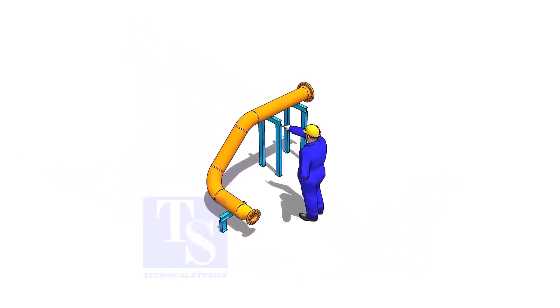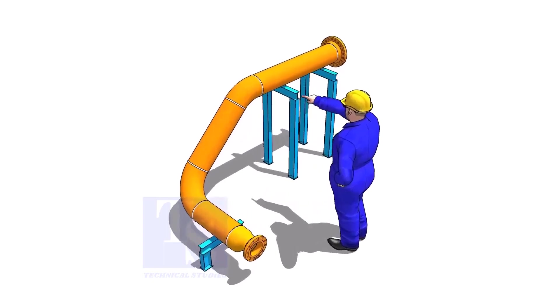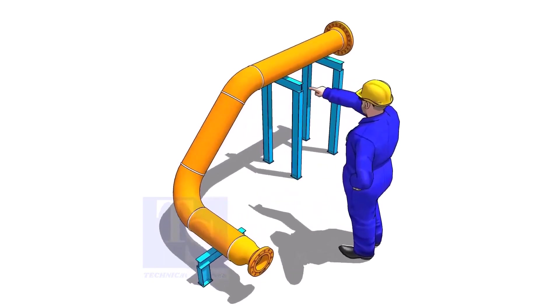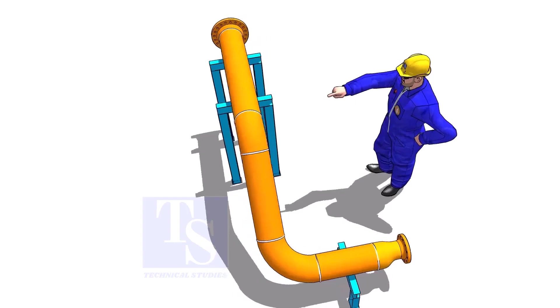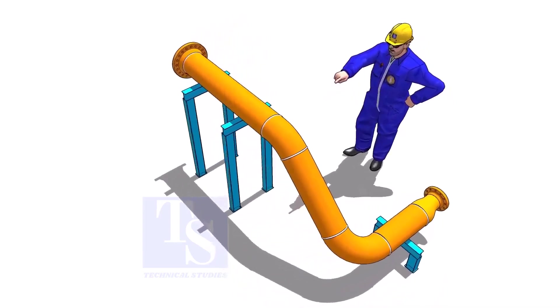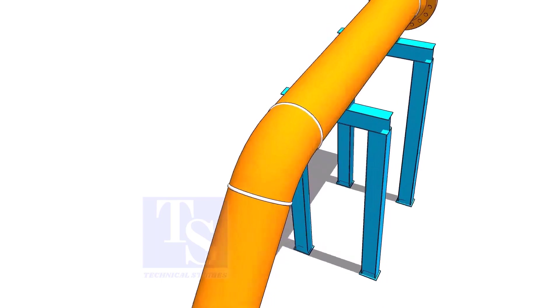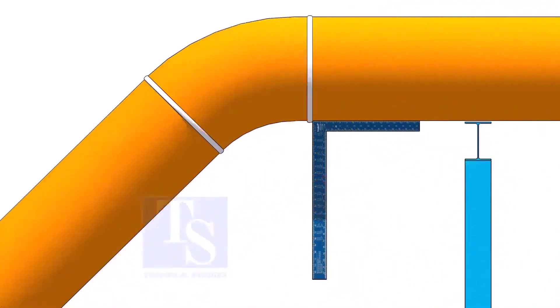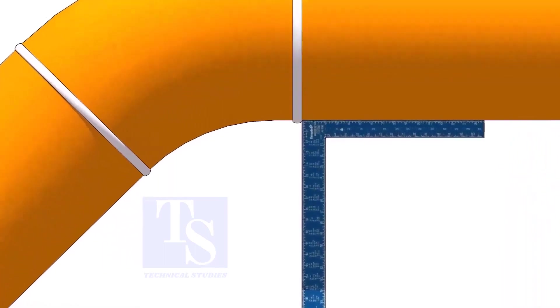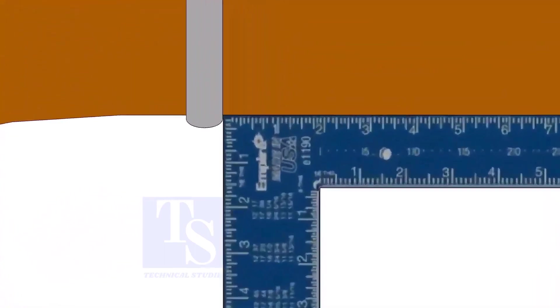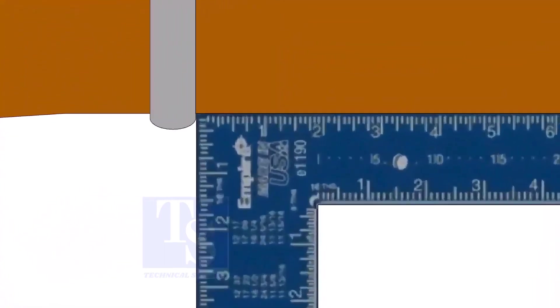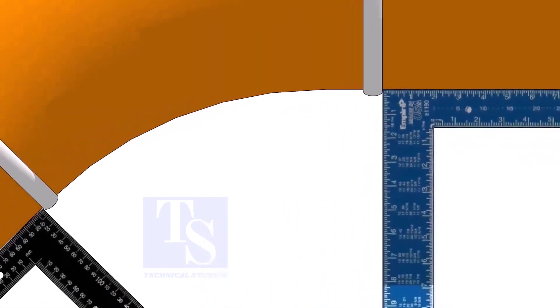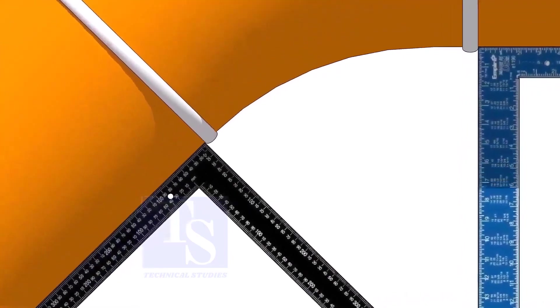Let us check the degree of the smaller elbow first. We need two pieces of large right angles for this job. Hold one right angle on the pipe just outside the weld joint, as shown. Hold another right angle on the other pipe. Make sure both right angles are sitting on the center of the pipe.